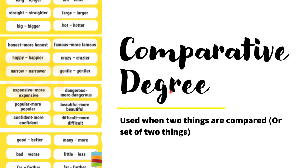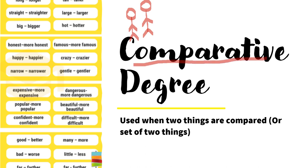Next, comparative degree. Comparative, as the name suggests, is when we are comparing two things — one person and another person. When we compare two people or two things, we call it comparative degree. Sometimes we also compare sets of things. So: first, when we compare two things; and second, when we compare two sets of things.